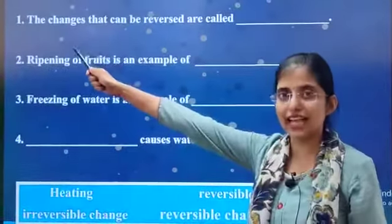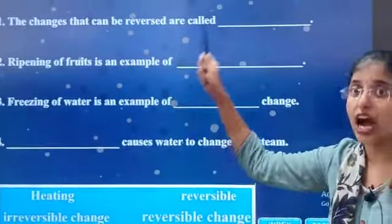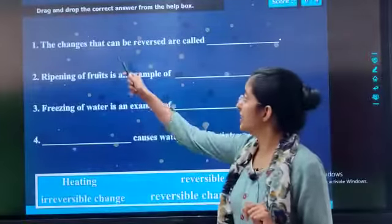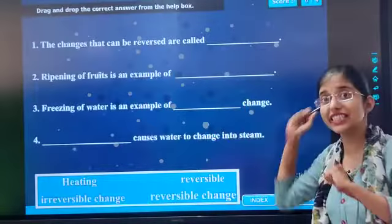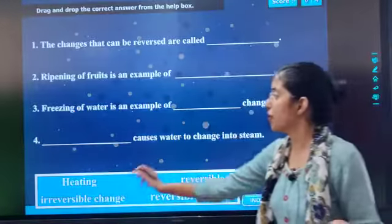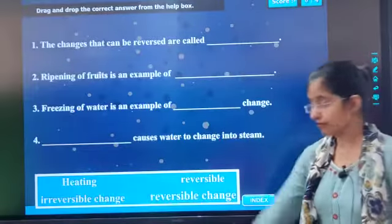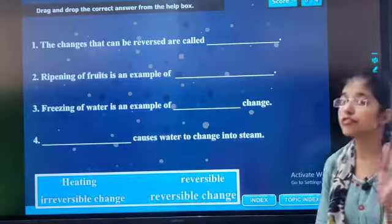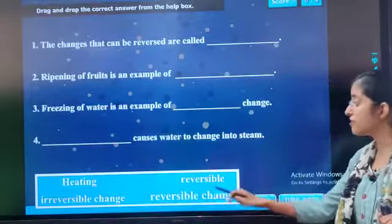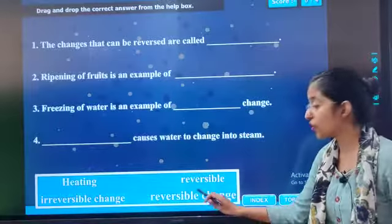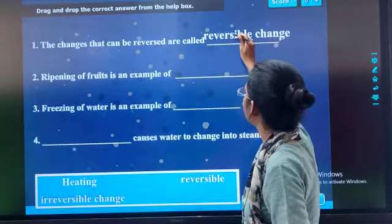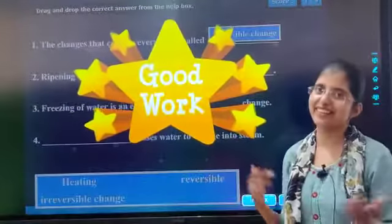So our first sentence: The changes that can be reversed are called dash. Those changes which can be reversed, what do we call them? Come on. Here are our options: heating, reversible, irreversible change, and reversible change. What is our answer? So our answer will be reversible change. So here is my answer and I am dragging and dropping it here. Good work.